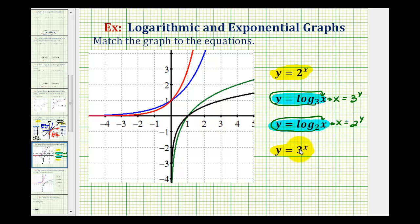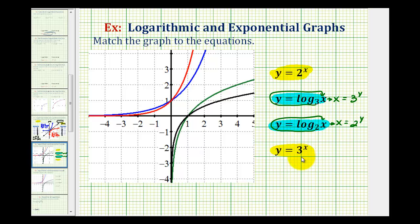Let's start by comparing the two exponential functions: Y equals 2 raised to the power of X and Y equals 3 raised to the power of X. Y equals 3 to the power of X has a base of 3 and Y equals 2 to the power of X has a base of 2. Since 3 is greater than 2, Y equals 3 to the power of X represents larger exponential growth and should be increasing faster.